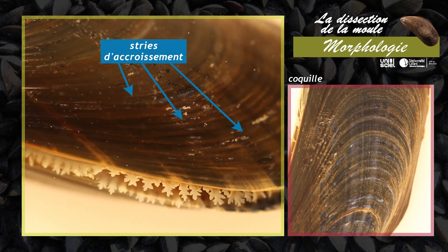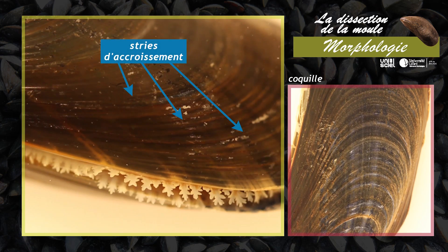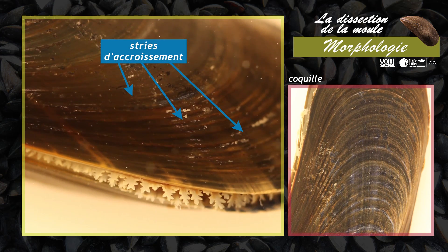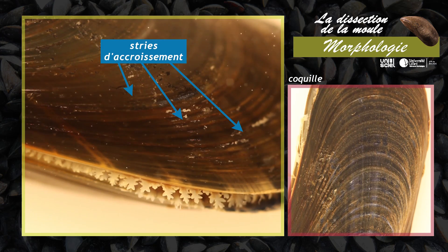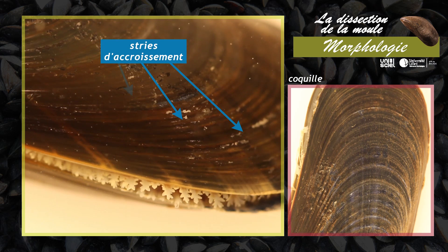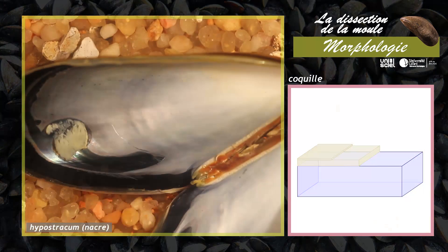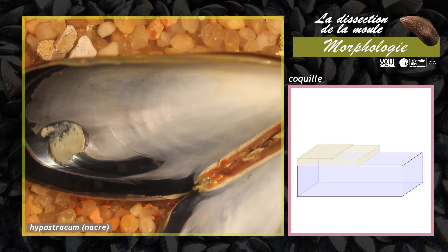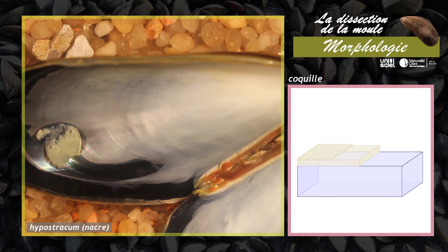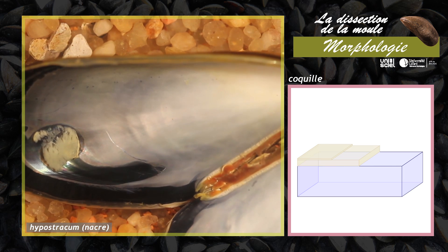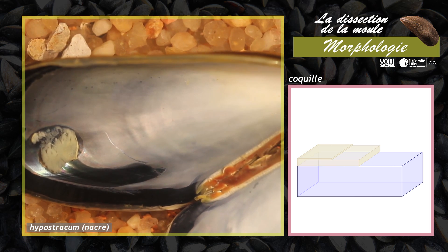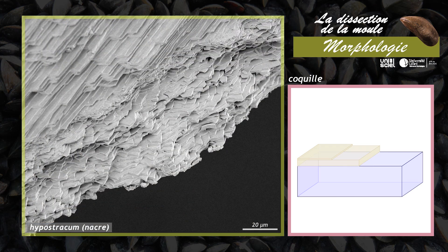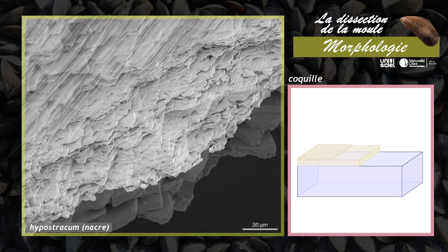Les stries visibles à la surface de la coquille soulignent la croissance discontinue de l'animal. La troisième couche, l'hypostrachome ou nacre, tapisse l'intérieur de la coquille. Elle est formée par de fines lamelles sécrétées par l'épiderme du manteau.